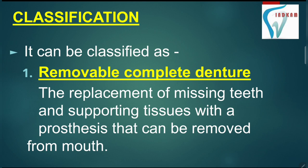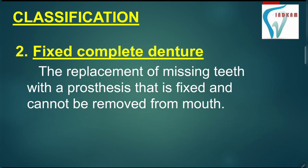Dentures can be classified into two types: removable complete denture or fixed complete denture. In removable complete denture, the replacement of missing teeth and supporting tissues is done with a prosthesis that can be removed from the mouth — we have to remove it daily, clean it, and reinsert it. In fixed complete denture, the replacement of missing teeth is done with a prosthesis that is fixed and cannot be removed from the mouth; we have to maintain its hygiene while it is inside our mouth.